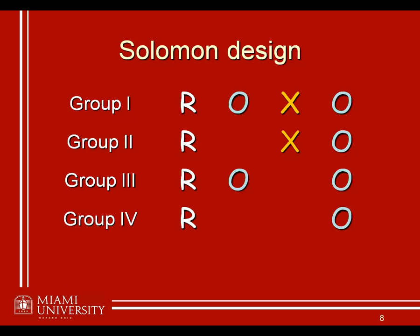Finally, adding a fourth group that receives no pre-test, no manipulation, and just the post-test enables further appropriate comparisons. For example, comparing groups 3 and 4 — neither of which had the experimental manipulation — but group 4 also had no pre-test, means there's no way to have a pre-test sensitization effect either. By using the complete Solomon four-group design — every possible combination of pre-test and experimental manipulation — you can make whatever comparisons are necessary to isolate all these different possible loci of effects.